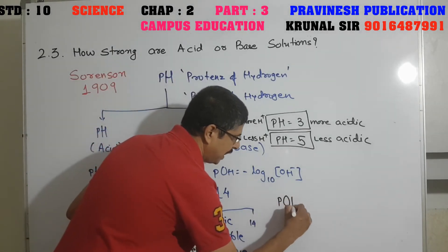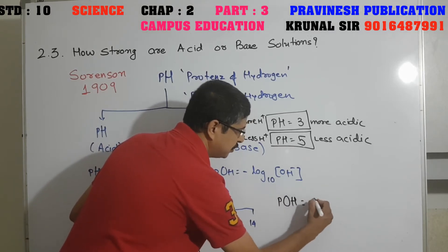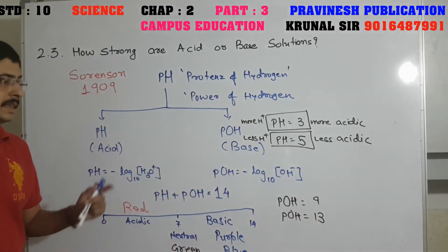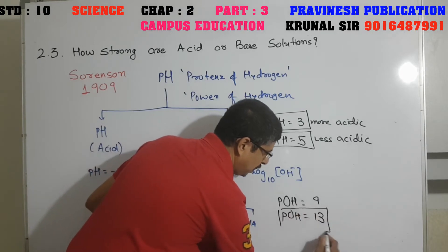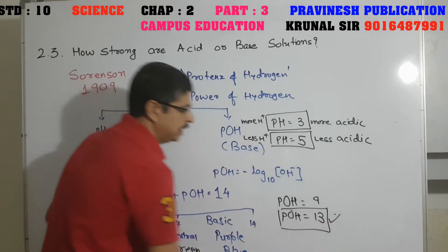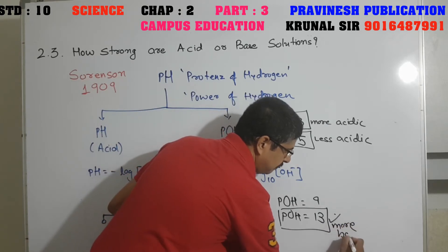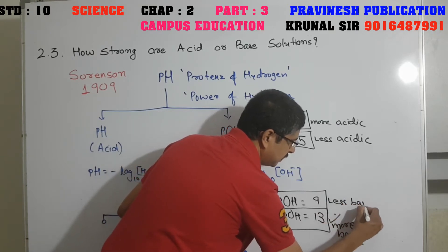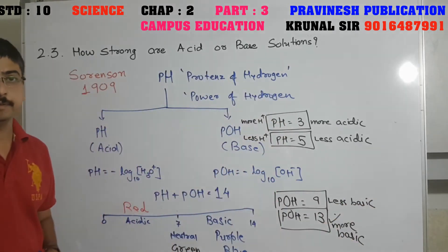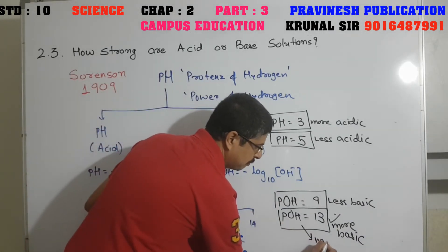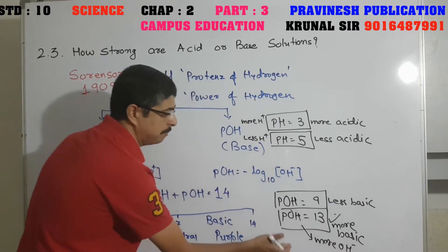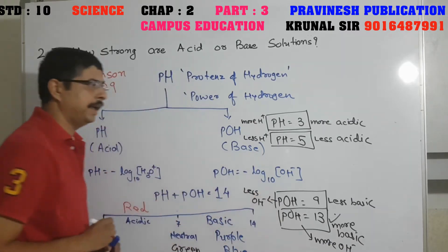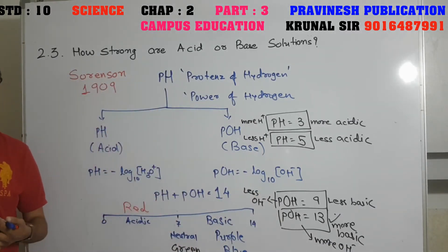pH 3 gives more H⁺ ions and pH 5 gives less H⁺ ions than the solution with pH 3. So lesser the pH number, more acidic the solution is. Next, if the pH of a compound is 9 and another is 13, which is more basic? pH 13, which is nearer to 14, is more basic. pH 9 is less basic than pH 13. pH 13 gives more OH⁻ ions compared to pH 9. This is basic information about the pH scale.